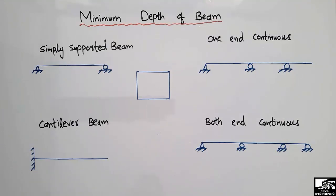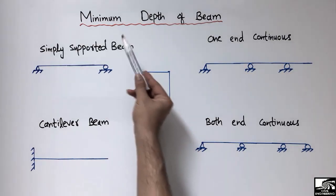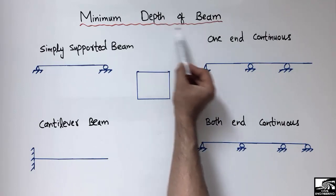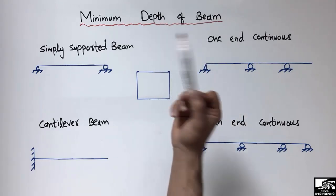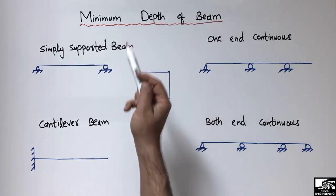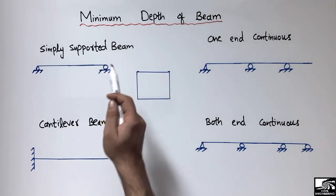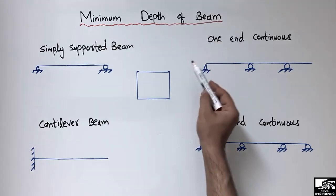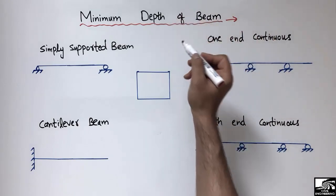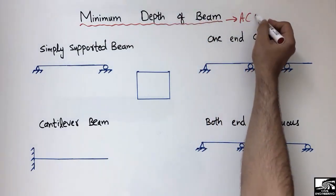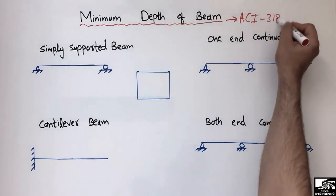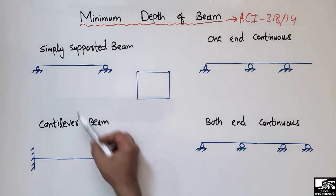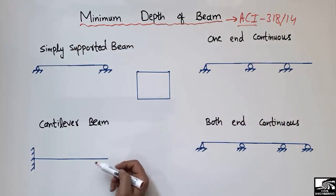Welcome back to E7 Engineering YouTube channel. Today our lecture is about the minimum depth or minimum thickness of the beam. The depth of the beam is very important — it is the first step in designing. We first assume the cross-section depth and width of the beam before starting the design. In this lecture, I will mainly focus on the minimum depth requirement by the American Concrete Institute ACI 318-14.